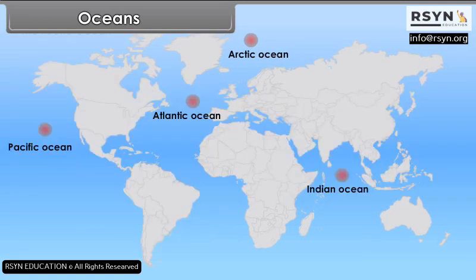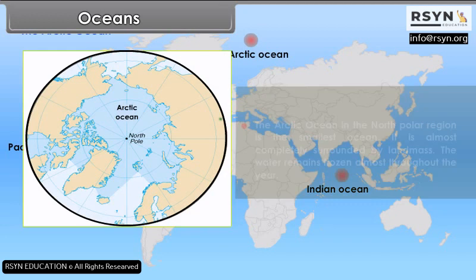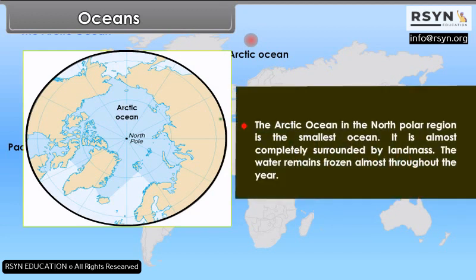The Arctic Ocean, in the North Polar region, is the smallest ocean. It is almost completely surrounded by land mass. The water remains frozen almost throughout the year.